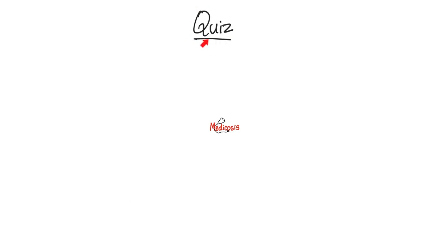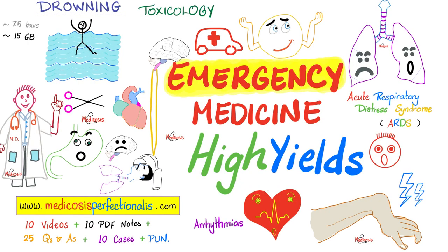Quiz time: suppose you suspect cardiac tamponade. What if the same patient also has bacterial pneumonia and/or empyema? Does this make the likelihood that the patient also has cardiac tamponade higher, lower, or the same probability? Comment below. To learn about cardiogenic shock, neurogenic shock, obstructive shock, hypovolemic shock, septic shock, and more, download my emergency medicine high yields course at medicosisperfectioneros.com.